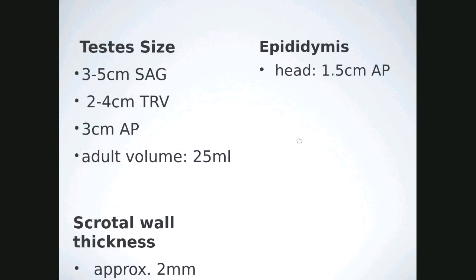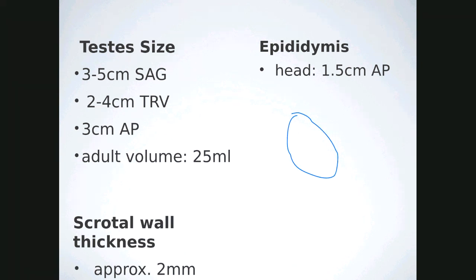The size of the testes is 3 to 5 centimeters in the sagittal plane — oblong like an egg — 2 to 3 centimeters transverse, and 3 centimeters AP. The radiologist uses these three measurements to calculate volume. The epididymis: we only measure the head, which is about 1.5 centimeters. The AP measurement of the head is taken as an anterior-to-posterior dimension.